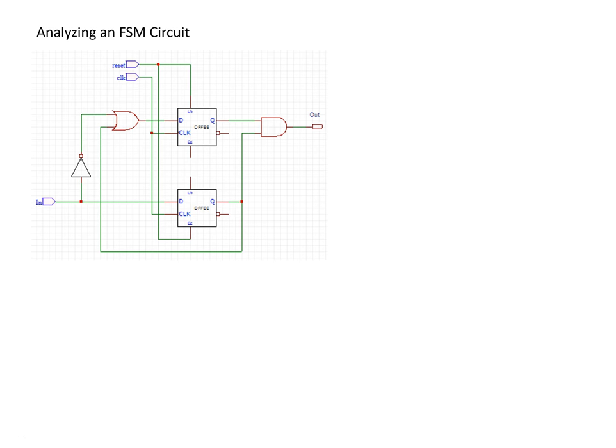In this video, we're going to look at how to analyze a circuit to determine its higher level functionality. In this case, we're going to focus on a circuit that implements a finite state machine — either one we've deduced or been told implements a finite state machine — and we want to figure out the functionality of this state machine and draw a state transition diagram for it.